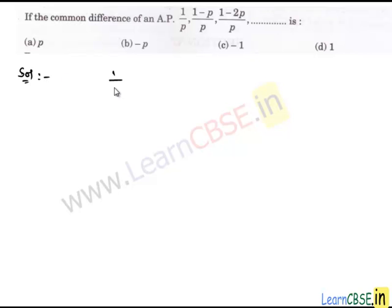Given AP is 1 upon P, 1 minus P upon P, 1 minus 2P upon P, so on.